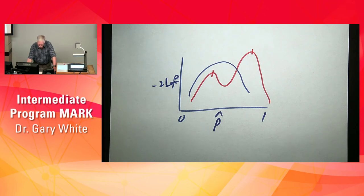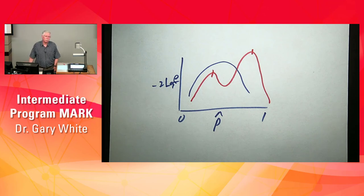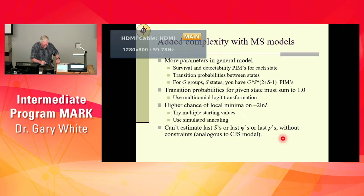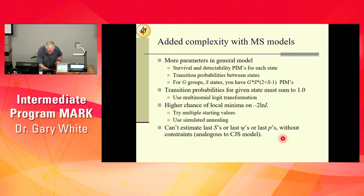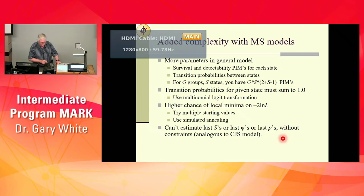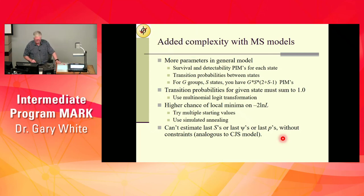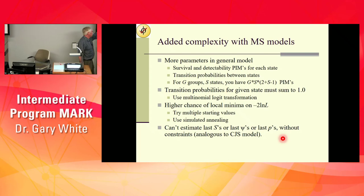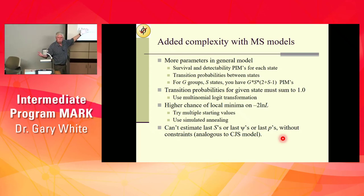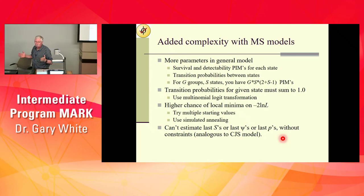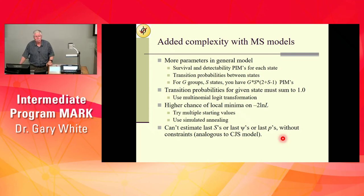Not surprisingly, you can't estimate the last S's, psi's, or P's without constraints — this is the CJS model extended to multiple states, so all the same issues apply. But if you add the robust design, then you can estimate them because you get the last P's.